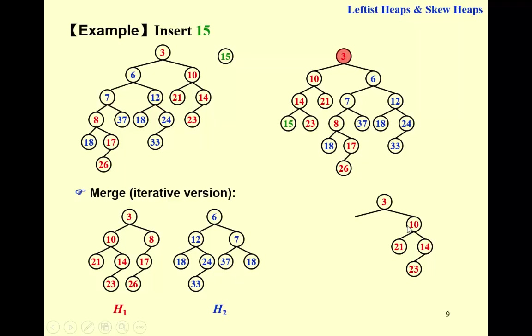So first, we keep three and swap children. And compare these two, we would keep six and swap children, and keep seven, keep eight, and finally keep 18.